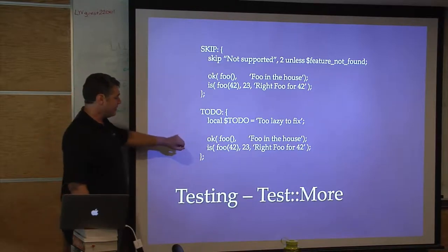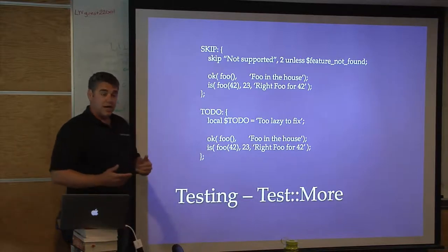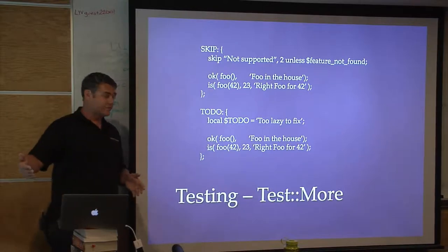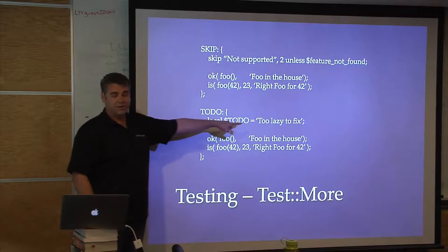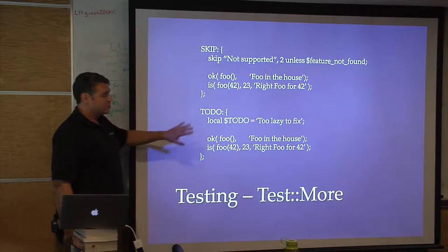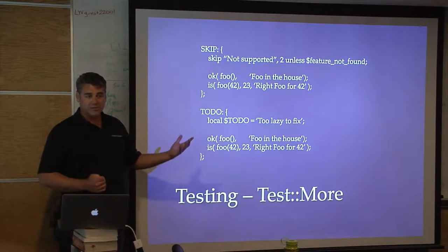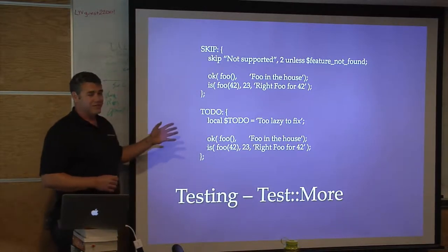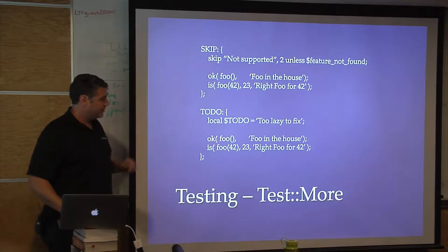Todo is the lazier one — let's say you found a problem and didn't want to fix it right then, or you want to write a test for a future feature you haven't implemented yet. Usually I'm not a big fan of this; if there's future development, it shouldn't be in the release test suite. You usually find todo when something is broken and someone hasn't gotten around to fixing it.